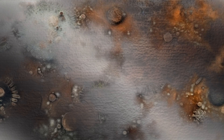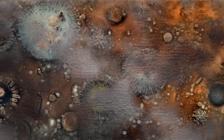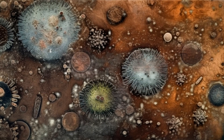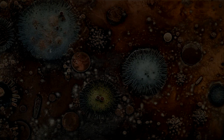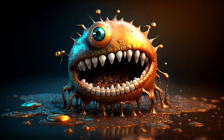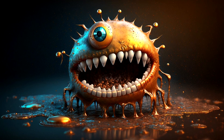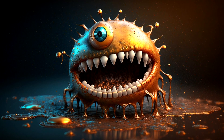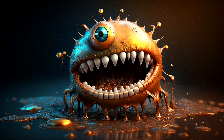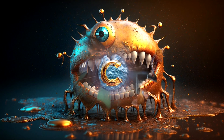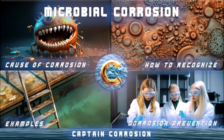Microbial corrosion, also known as microbiologically influenced corrosion, is a type of corrosion that occurs as a result of the activity of microorganisms such as bacteria, archaea, and fungi. These microorganisms can attach themselves to metal surfaces and create an environment that is conducive to corrosion. You are watching a Captain Corrosion video where you will learn about microbial corrosion.